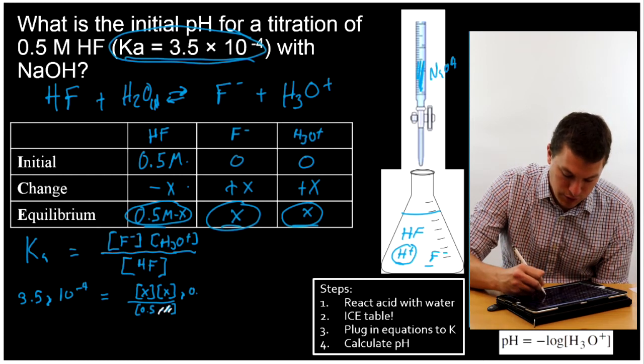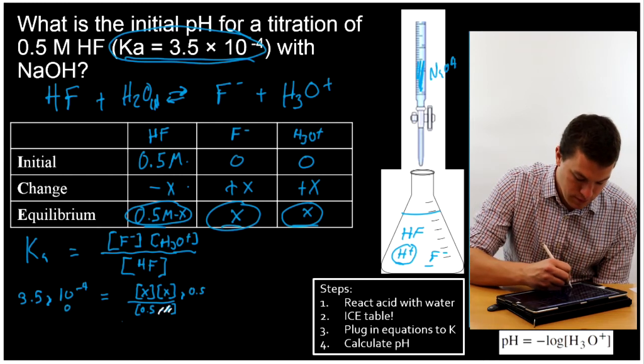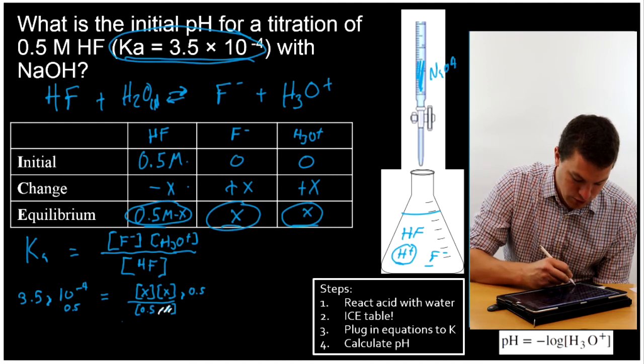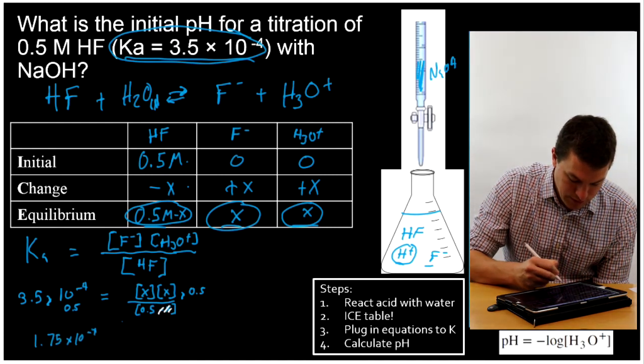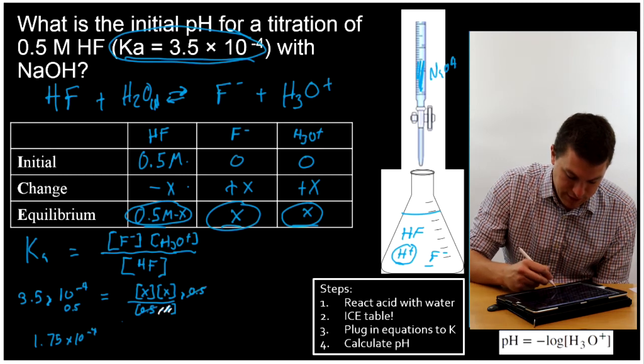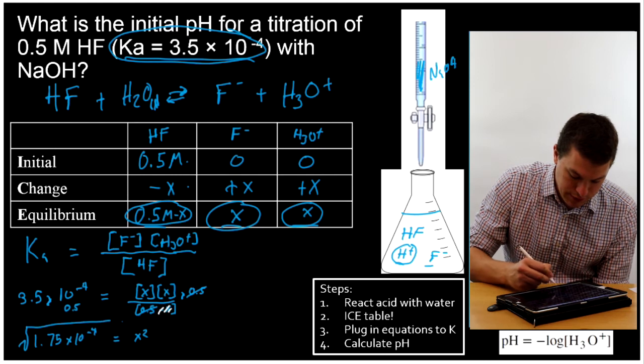Now I just multiply both sides by 0.5. And what that's going to give me is 1.75 times 10 to the minus 4. My 0.5's cancel out on this side, and I'm just left with X squared. And then all I have to do is take the square root of both sides.